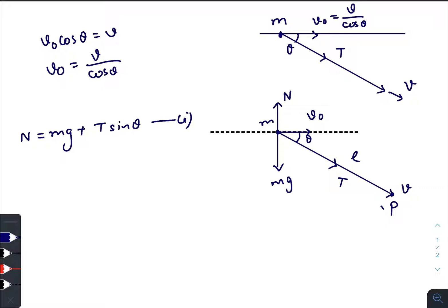While standing on P, the tangential velocity, the relative tangential velocity of the mass is V0 sine theta.